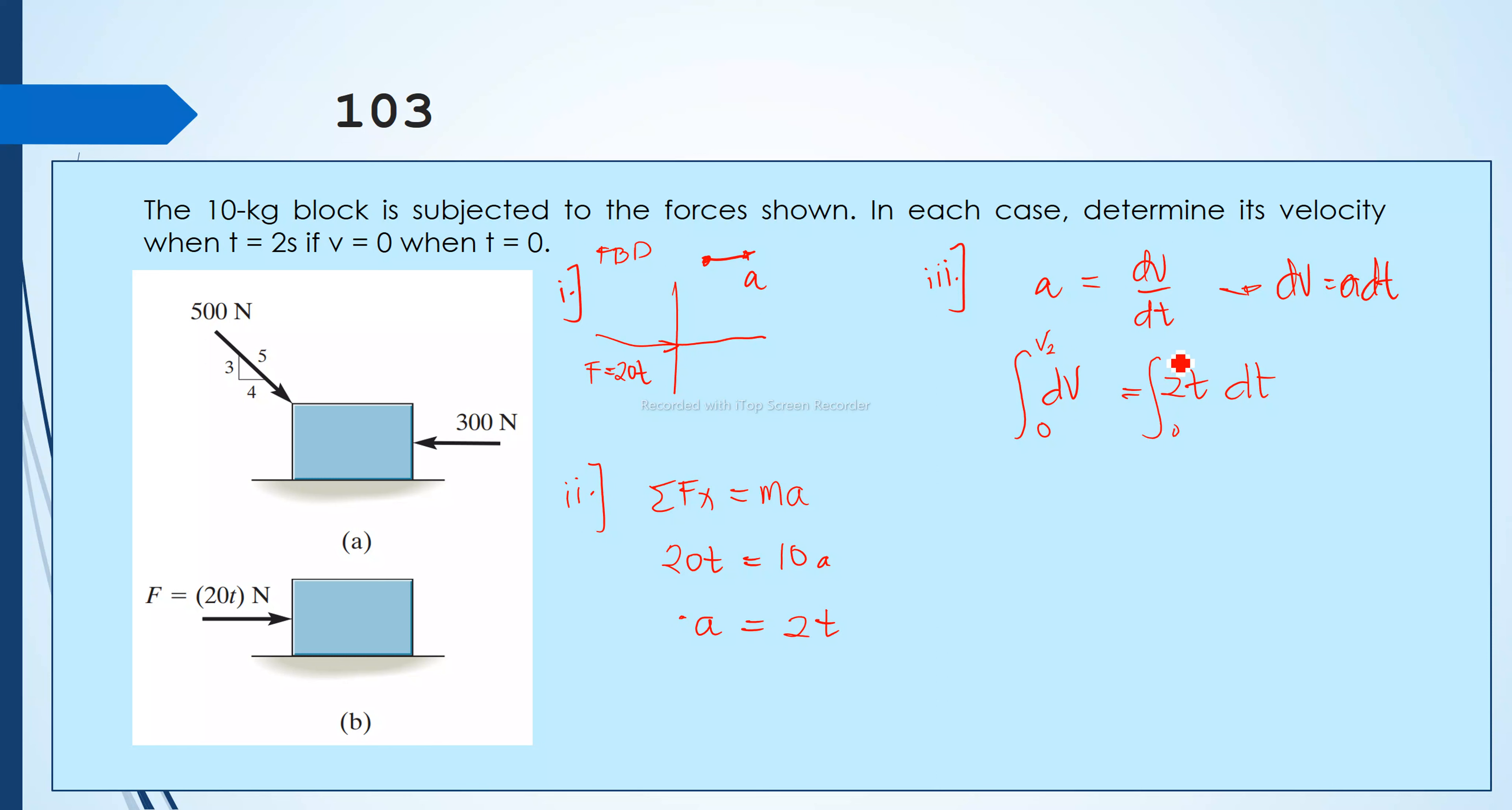So we have here V evaluated from 0 to V2, V sub 2, and then on the right side we have T squared evaluated from 0 to 2 seconds. So you have V sub 2 minus 0, final velocity minus initial velocity, is equal to the final time squared minus initial time squared. Or simply, our velocity or final velocity, or the velocity at t is equal to 2 seconds, is equal to 4 meters per seconds.